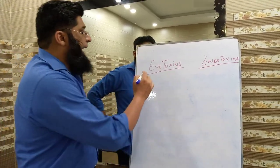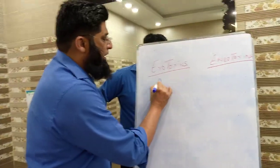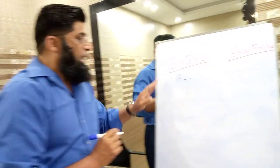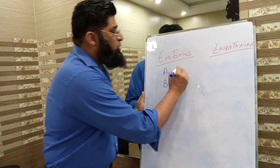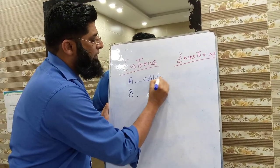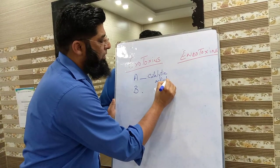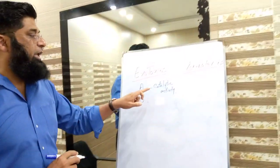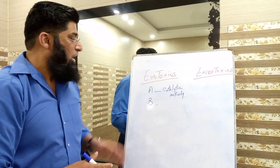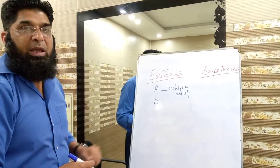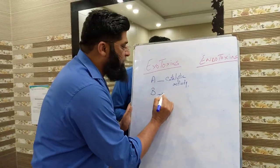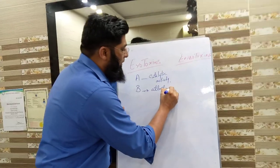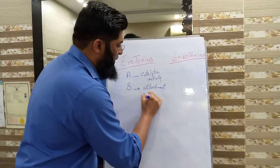Exotoxins are composed of two subunits, A and B. The A subunit is responsible for catalytic activity, while the B subunit is responsible for attachment to the cells of the host — specifically to their receptors on the host cell.